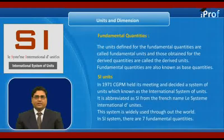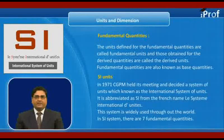In 1971, CGPM held its meeting and decided a system of units which is known as the International System of Units. It is abbreviated as SI from the French name Le Système International d'Unités. This system is widely used throughout the world. In SI system, there are seven fundamental quantities.